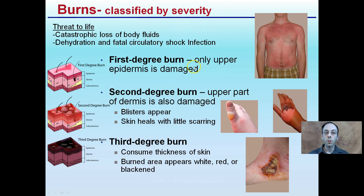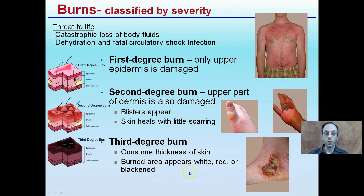Looking at burns classified by severity: first-degree burns — only the upper epidermis is damaged, like a sunburn. Second-degree burns — the upper part of the dermis is also damaged, blisters can appear, and it heals with little scarring. Third-degree burns are more severe, consuming the full thickness of the skin; the burn area appears white, red, or black, as seen on this person's foot. There are also fourth-degree burns, which are not shown here.